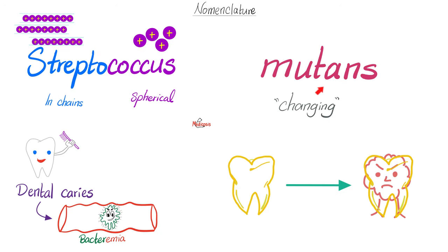Next, Streptococcus mutans — from mutation, always mutating. Think of it as a Frankenstein dentist. This bacteria can cause dental caries, and before you know it, it can lead to bacteremia. If you have a weak valve — like in cyanotic heart disease, infective endocarditis, or a history of bad rheumatic fever — your dentist should prescribe antibiotics after invasive dental procedures, because bacteremia can settle on your heart valves. Unlike Staph aureus, which causes acute bacterial endocarditis, Streptococcus mutans will give you sub-acute bacterial endocarditis.